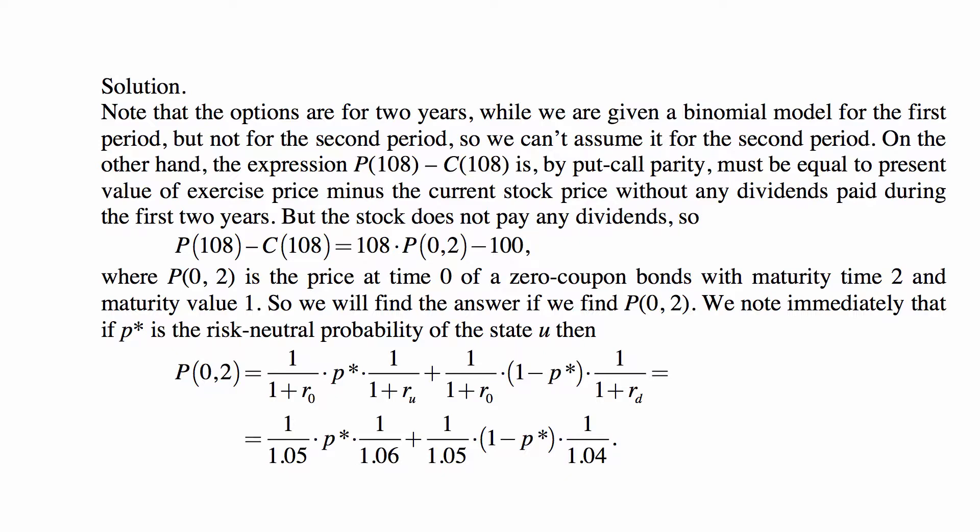On the other hand, if we look at it this way, that it's a payment of one in two years, and if we want to calculate its present value now, then at time one, if we're in the up state, it will be one over one plus r_u, and if we're in the down state, it'll be one over one plus r_d,